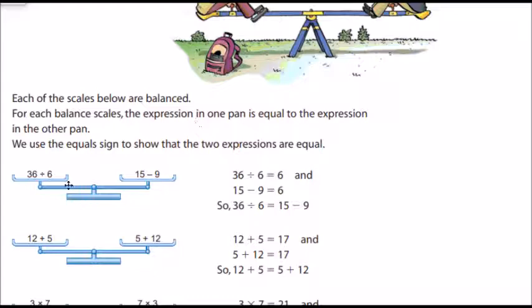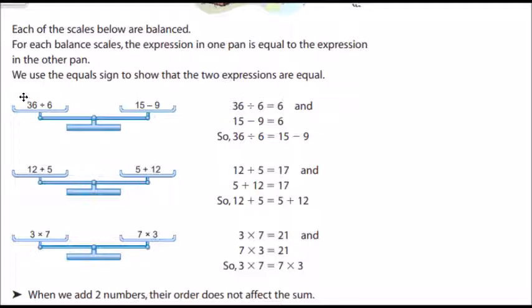For each of these balance scales, the expression in one pan, and this here is the pan, is equal to the expression on the other pan. We can use the equal sign to show that the two expressions are equal. Here I have 36 divided by 6 and 15 minus 9. When I look at just those two statements, they don't seem to have a lot in common. They don't have the same numbers, they don't have the same digits, they don't have the same operation. But when we do a little bit of work with those numbers, 36 divided by 6 is equal to 6, and 15 minus 9 is also equal to 6.